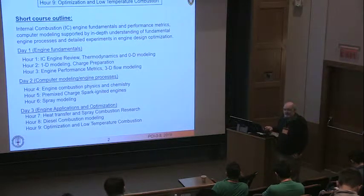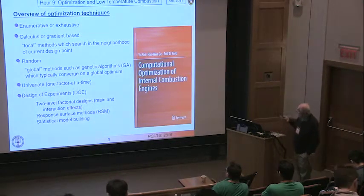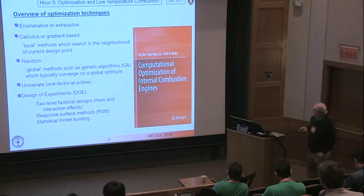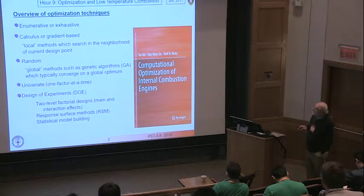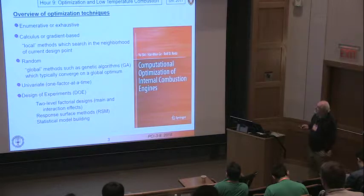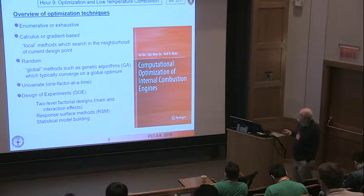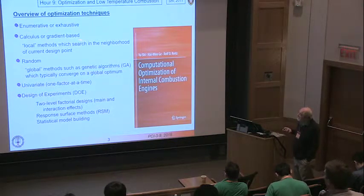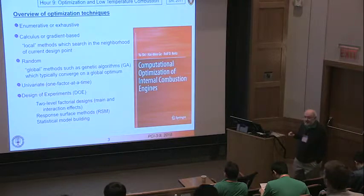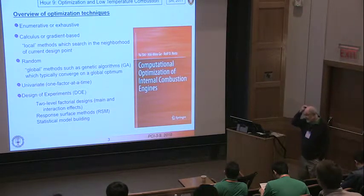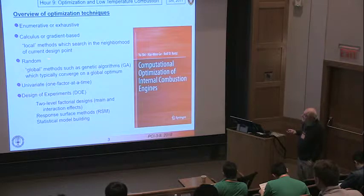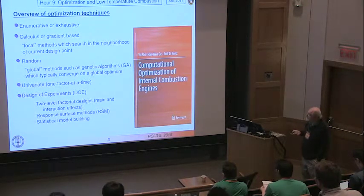I want to talk about the tools available for optimization. We provide a review of optimization techniques, and there are various techniques available, including calculus-based and random search methods. They each have application in certain areas. What we've done in a lot of algorithms is the random approach using genetic algorithms.